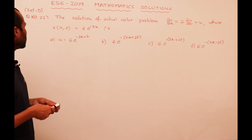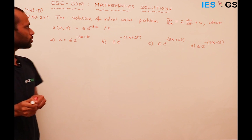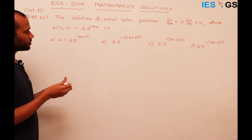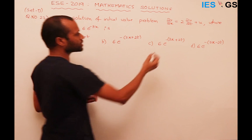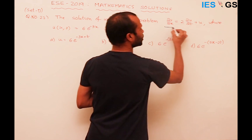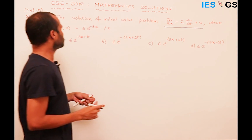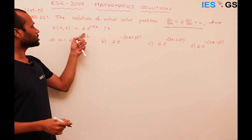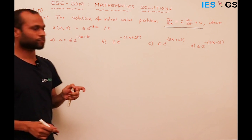Let us see question number 22. The question reads: the solution of the initial value problem ∂u/∂x = 2(∂u/∂t) + u, where u(x, 0) = 6e^(−3x), is?